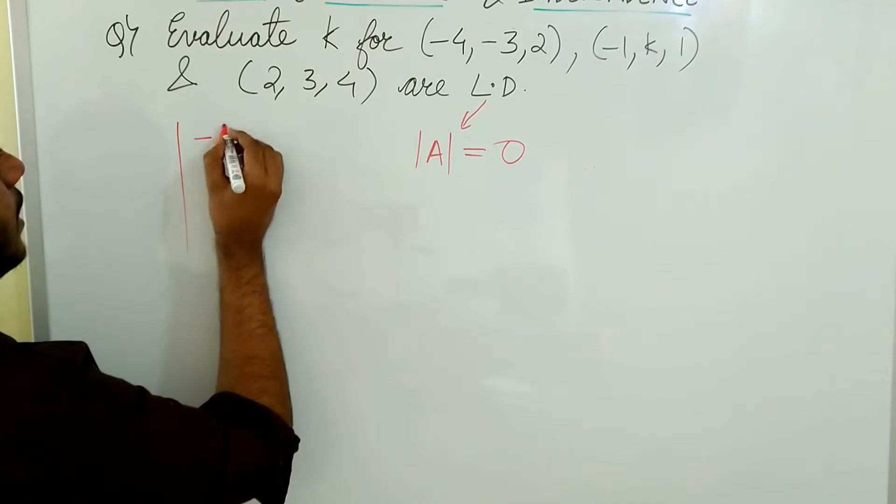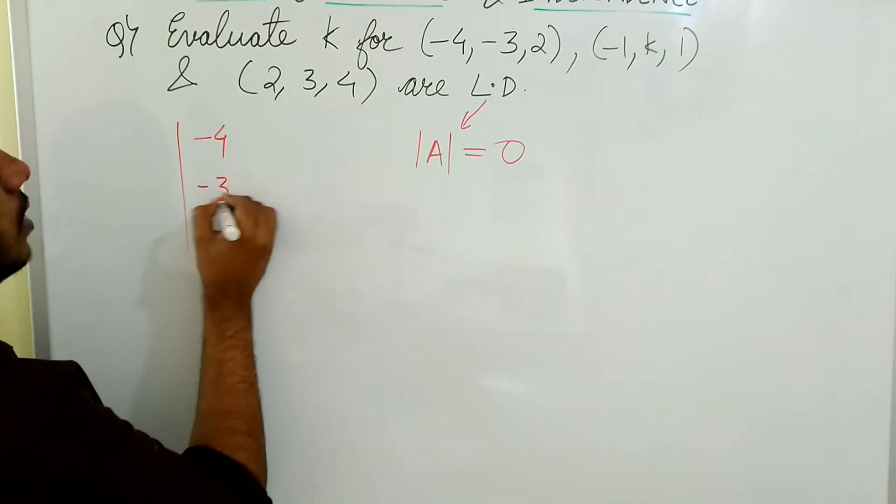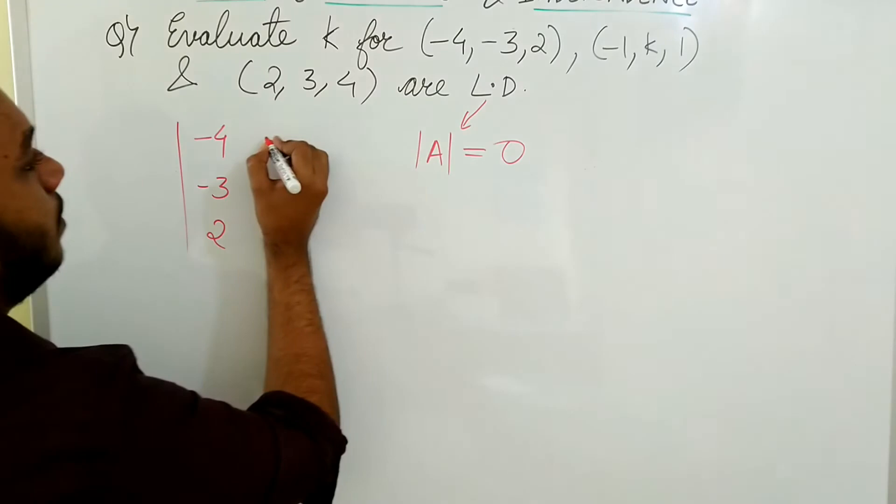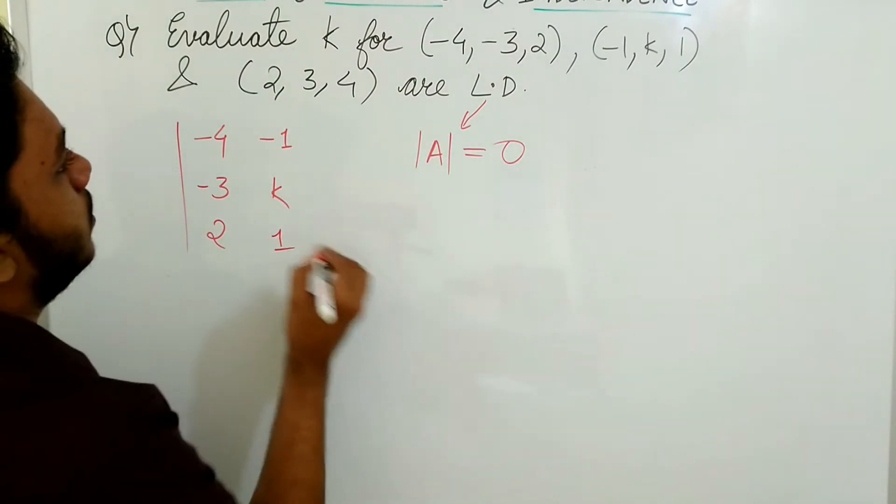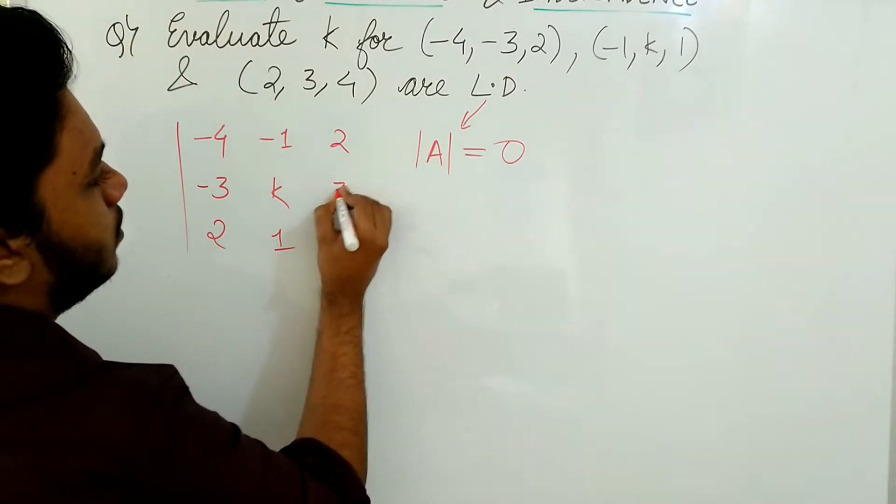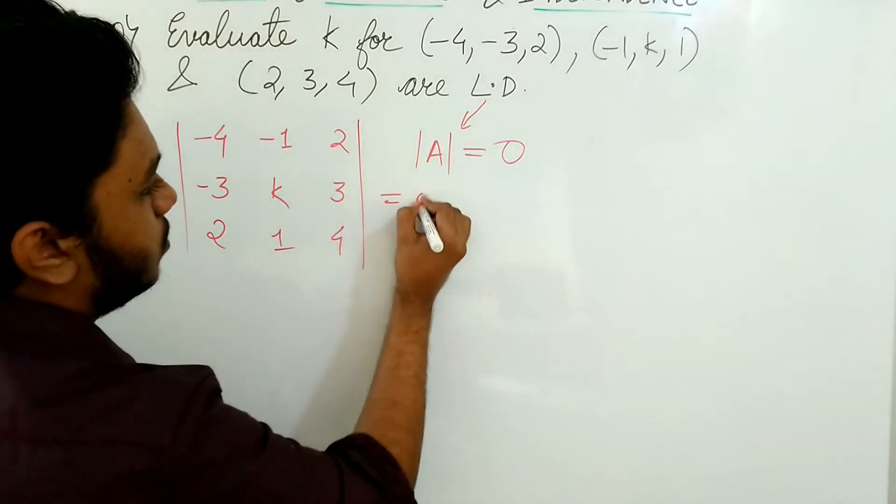That means, first vector: -4, -3, 2. Next: -1, k, 1. Then: 2, 3, 4. It should be equal to 0.